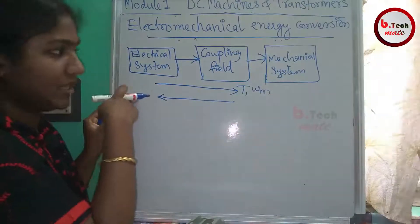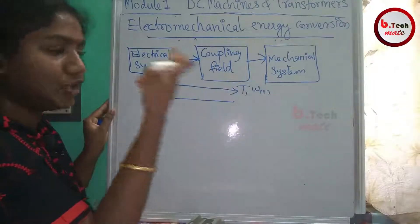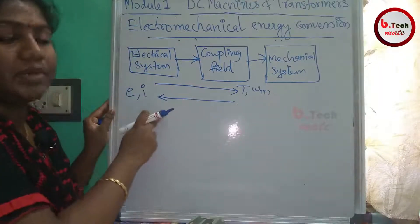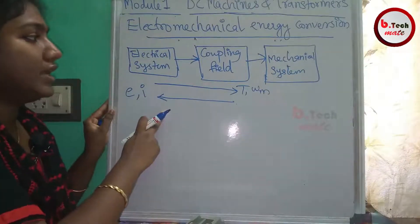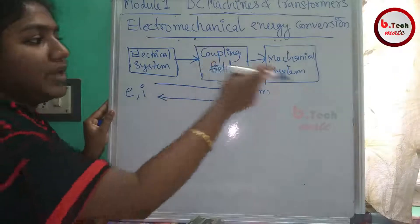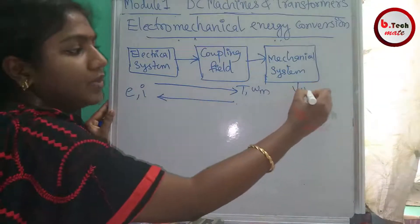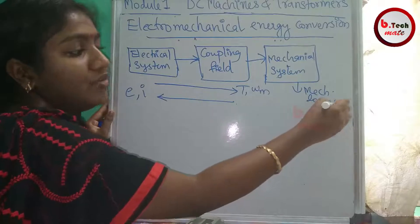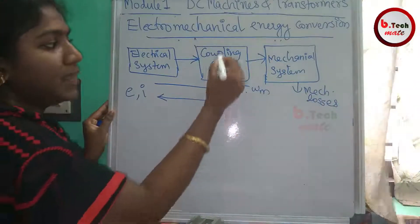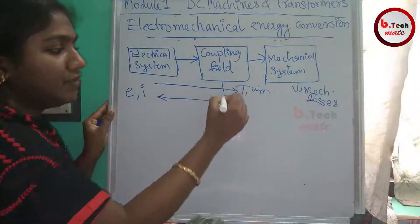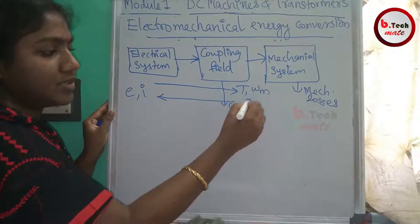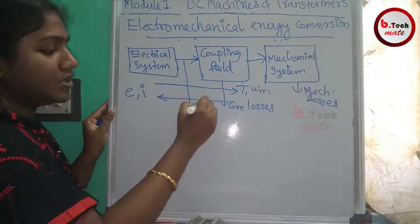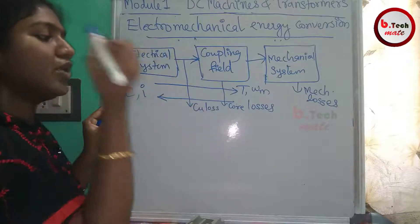Right-to-left is Mechanical-to-Electrical conversion. We have two parameters. There are losses in electrical and mechanical systems. We have mechanical losses such as friction and windage losses. We also have coupling field and core losses. The electrical losses are copper losses, represented as I²R.